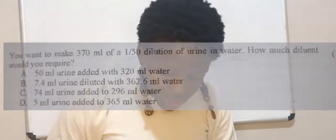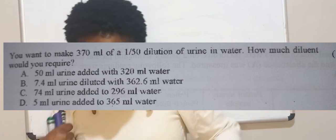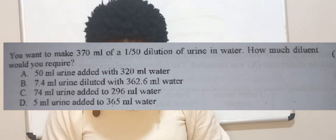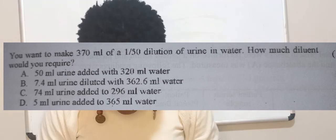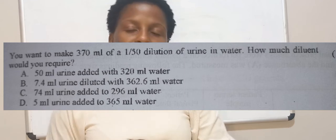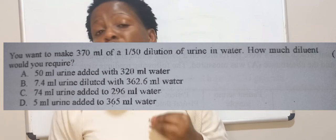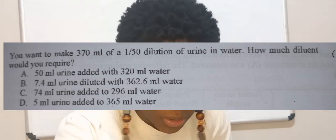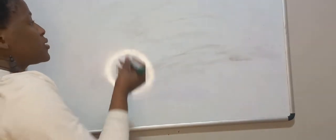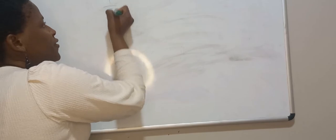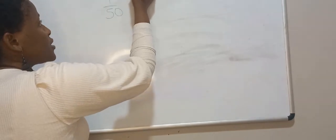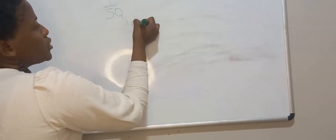The first question says: you want to make 370 ml of a 1:50 dilution of urine in water — how much diluent would you require? You are given the total volume and the dilution, but the question only wants the diluent. You are already given the dilution, so your dilution is 1 in 50. With a dilution statement, the top part represents your solute and the bottom part represents your total volume.